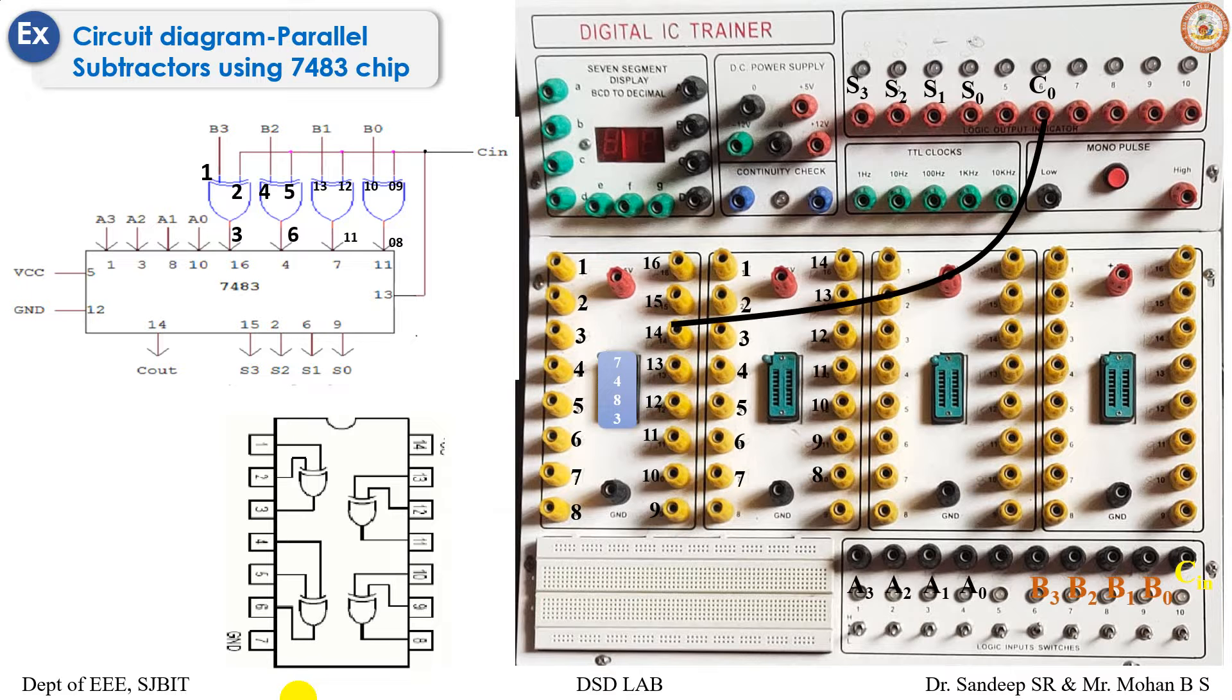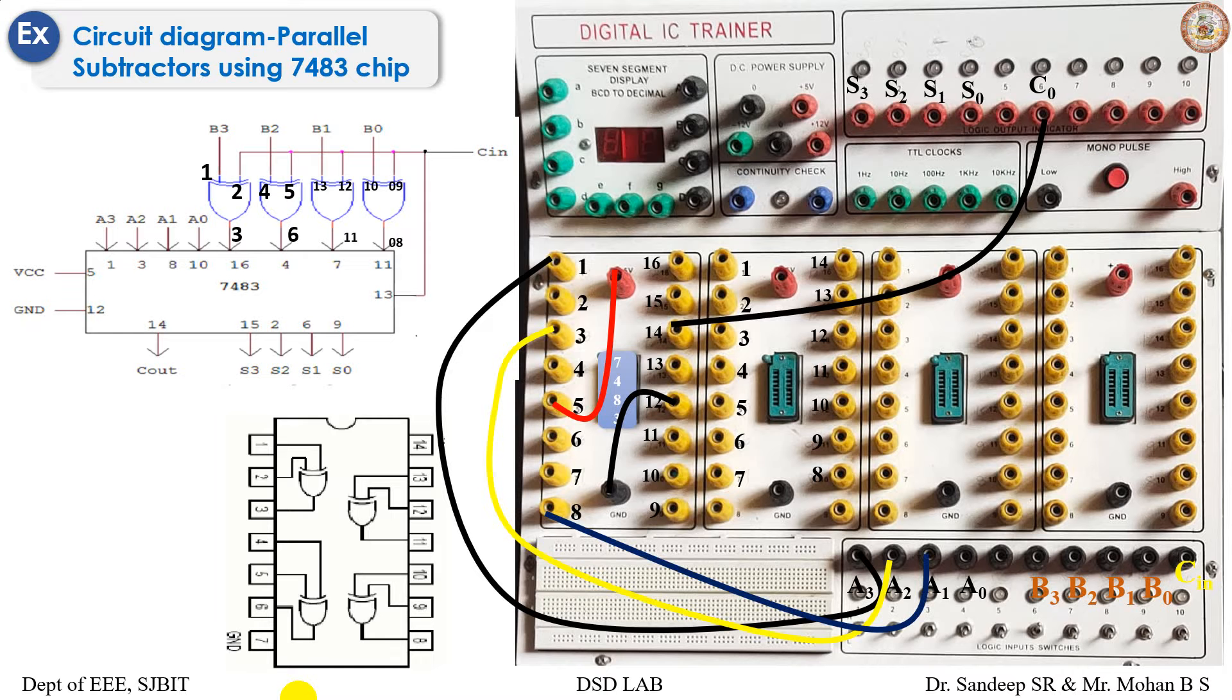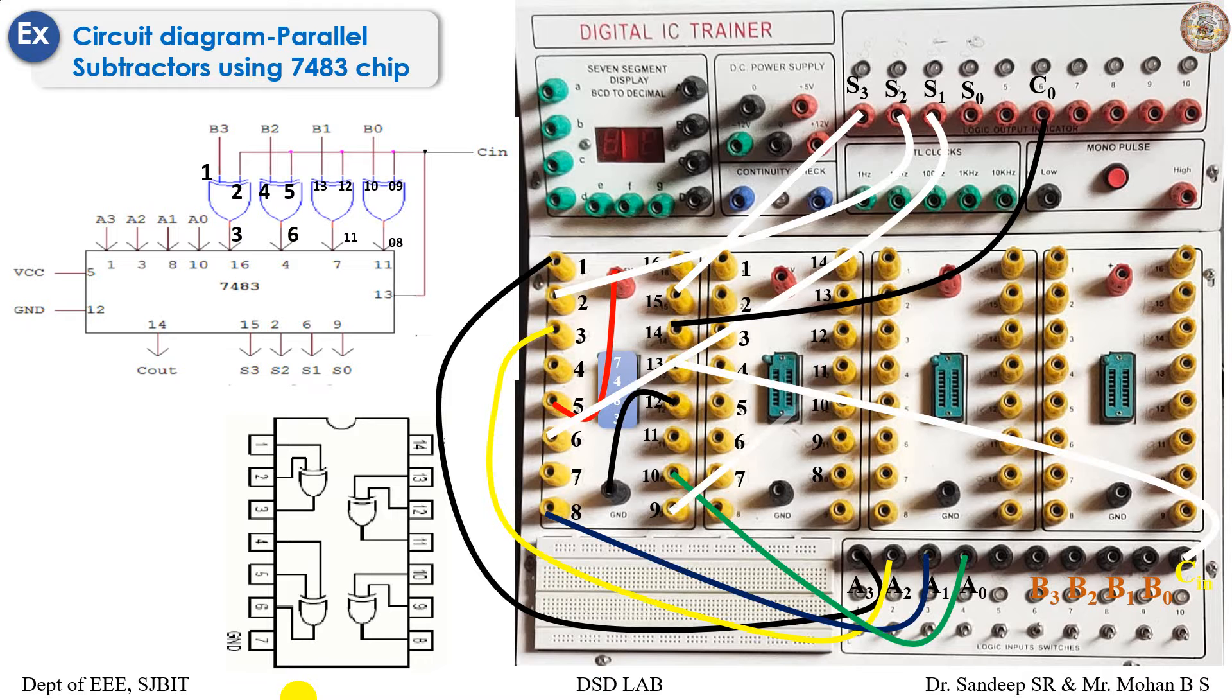The circuit is added as per the diagram. Pin 14 is given as C out, and pin number 5 for VCC, pin number 12 for GND. Respectively, the inputs are between 1, 3, 8 and 10 - that is your first 4-bit input. The second 4-bit input respectively 13, 6 and 15.